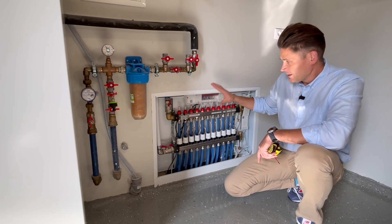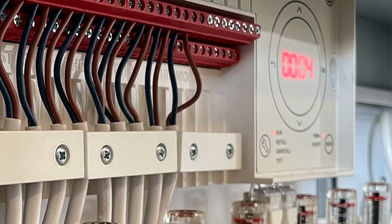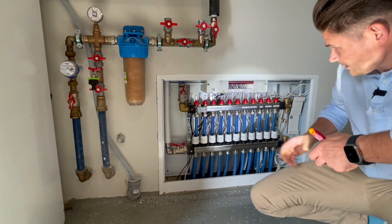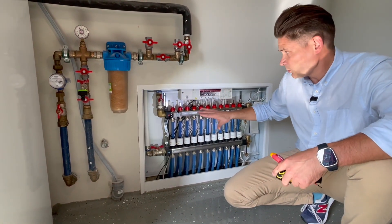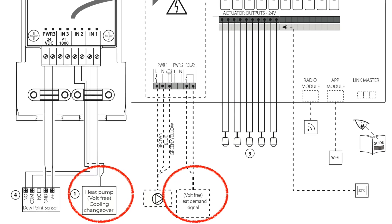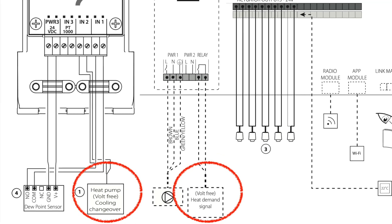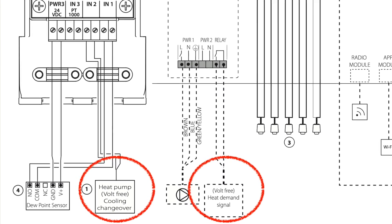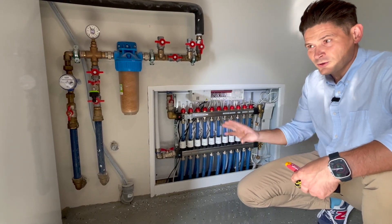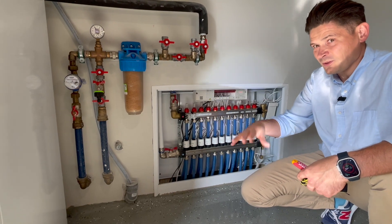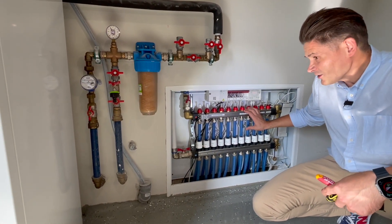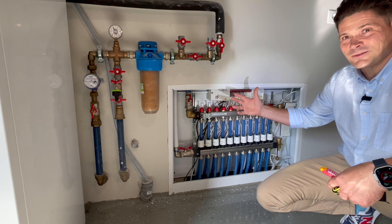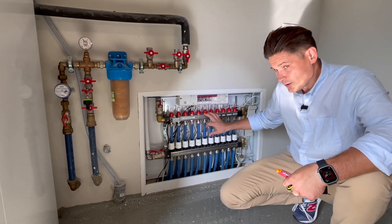Here we have application 004. This means the heat pump sends a signal to the Icon controller when it wants cooling, and the demand for cooling from the house is supplied via the boiler relay to the heat pump. They both communicate with each other: the heat pump switches between heating and cooling, and the Icon controller calls for a demand for cooling or heating. The application here is 004.